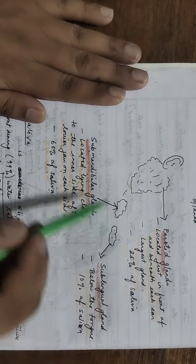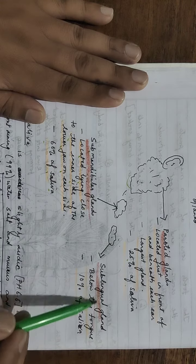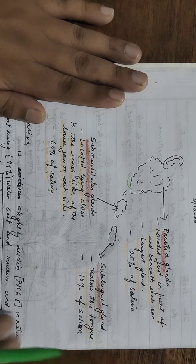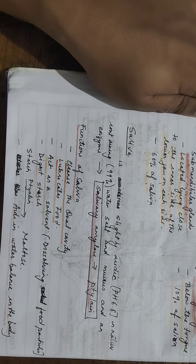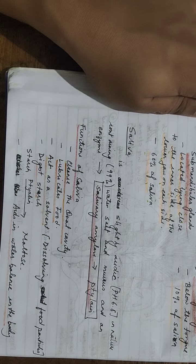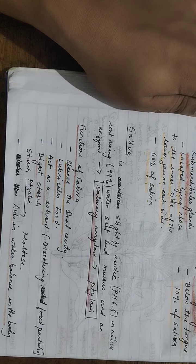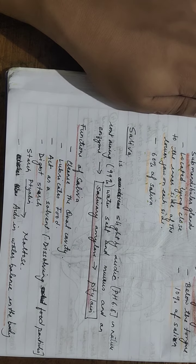So we have parotid gland, submandibular gland, and sublingual gland. Now, saliva is slightly acidic with pH scale 6.8 in nature. This can be asked for short type also: is saliva acidic or basic in nature?